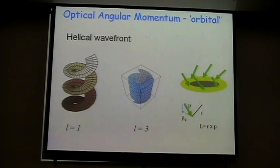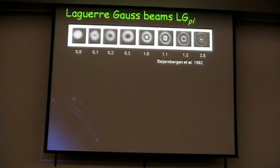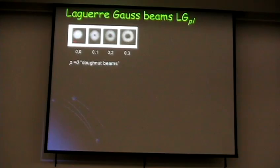Helical wave fronts for Gauss-Laguerre L=3 form a more complicated spiral, with orbital angular momentum equal to L times h-bar. I can produce beams of Gauss-Laguerre modes 00, 01, 02, 03, 10, etc. I focus on the L≠0 ones with helical wave fronts and phase singularities on axis — they look like donut beams. They can be generated by lasers and other means. As the charge grows, the dark spot in the middle gets bigger and the ring of light gets narrower.